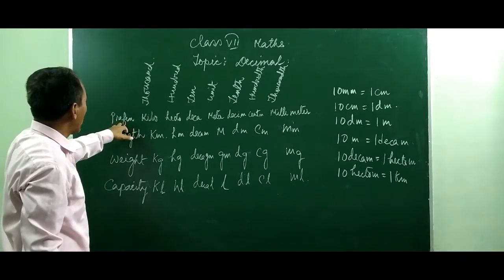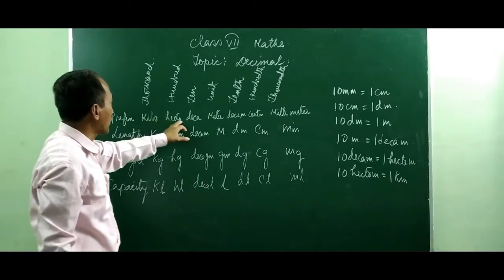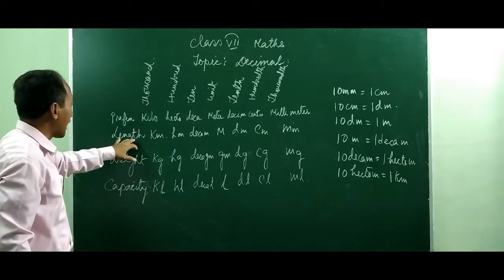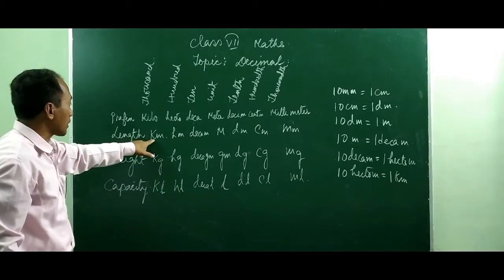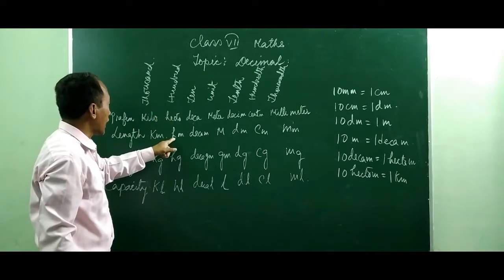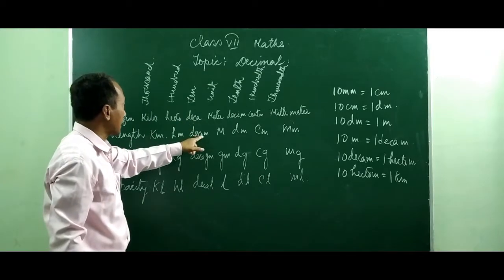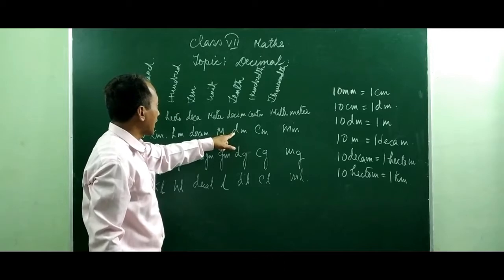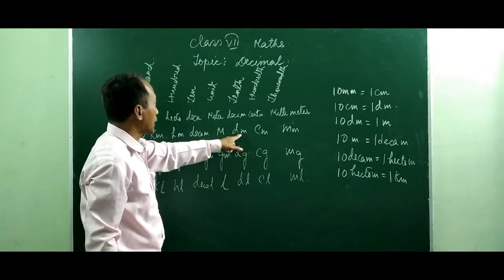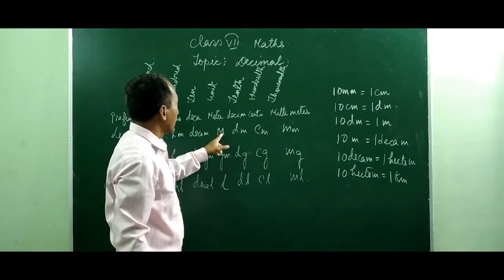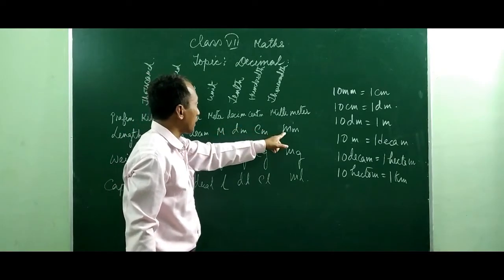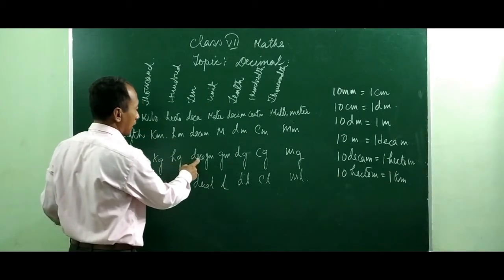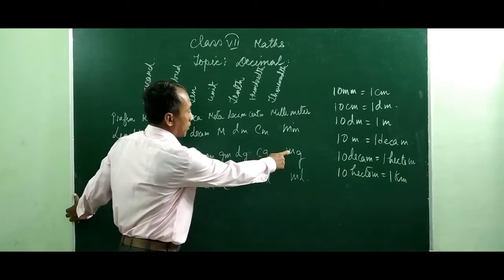The prefixes may be taken as: kilo, hecto, deca, meter, deci, centi, milli. So if you measure length: the thousandth place is kilometer, hundredth place is hectometer, tenth place is decameter, unit place is meter, and after the decimal — tenth place is decimeter, hundredth place is centimeter, thousandth place is millimeter. For weight: kilogram, hectogram, decagram, gram, decigram, centigram, milligram. Similarly in capacity: kiloliter, hectoliter, decaliter, liter, deciliter, centiliter, and milliliter.